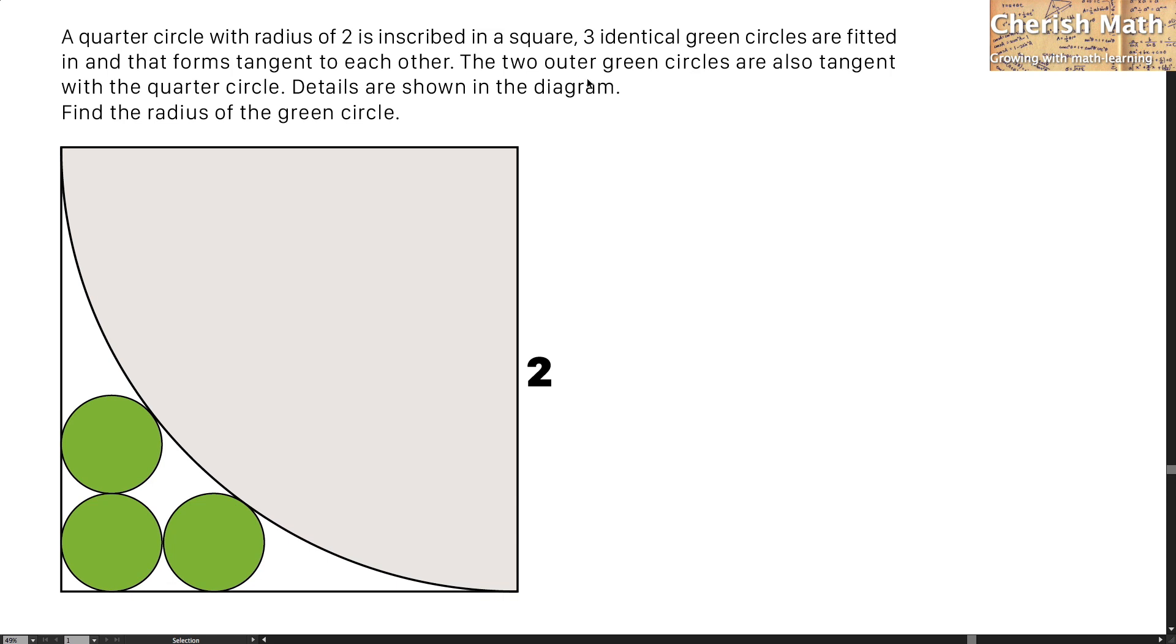The two outer green circles are also tangent with the quarter circle. Details are shown in the diagram. Find the radius of the green circle.